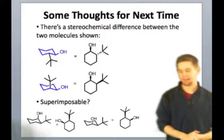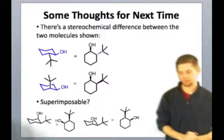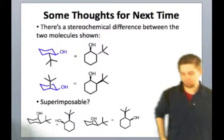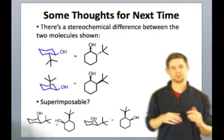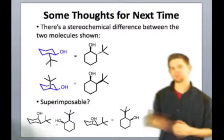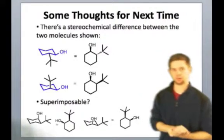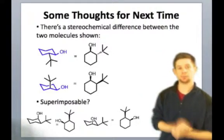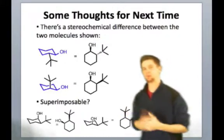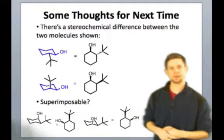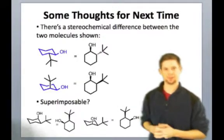All right, so the last thing I wanted to do was talk about a couple of things to think about for next time. We've seen this interesting difference between axial and equatorial substituents in terms of energy. Axial substituents are often more unstable than equatorial substituents, and we've seen how that influences the conformational dynamics of polysubstituted cyclohexanes, just on the last slide.